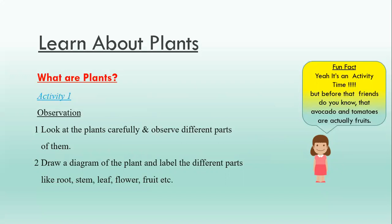Let's start the activity. Today you will need to look at plants carefully and observe the different parts of them. Be careful not to break them. Next, you have to draw a diagram of the plant and label different parts, like the root, stem, leaf, flower, fruit, etc.